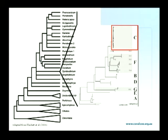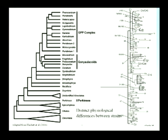Complicating matters even further, symbiodinium is a complex group in themselves. They can be divided up into nine separate clades, and within these clades there is genetic diversity. We're concentrating on clade C because that's the dominant symbiodinium type in the Indo-Pacific. Within clade C there's a variety of diversity, and importantly each subtype shows very distinct physiological differences — so this is not simply fine-scale genetic diversity, these are actually different physiological responses.